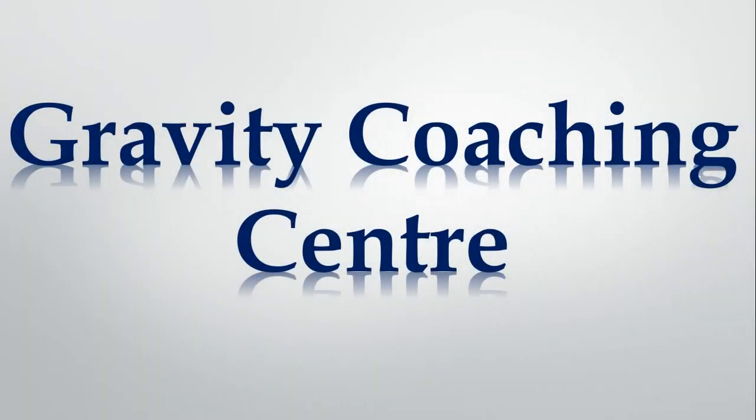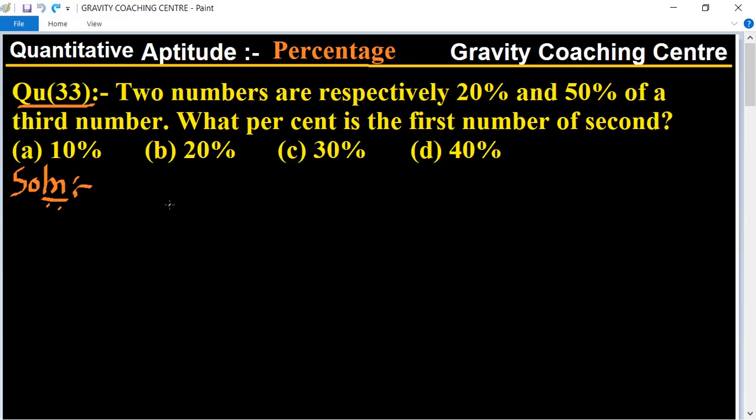Welcome to our channel, Gravity Coaching Center. Quantitative aptitude chapter percentage, question number 33. Two numbers are respectively 20% and 50% of a third number. What percent is the first number of second?